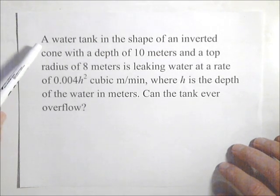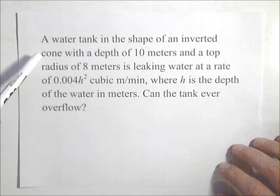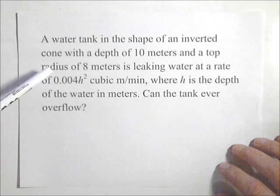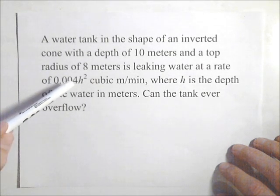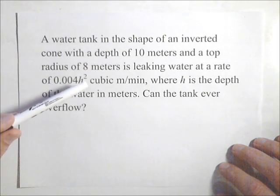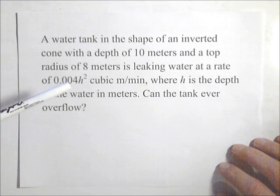A water tank in the shape of an inverted cone with a depth of 10 meters and a top radius of 8 meters is leaking water at a rate of 0.004h² cubic meters per minute, where h is the depth of the water in meters.